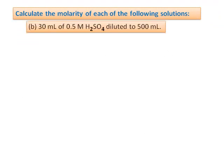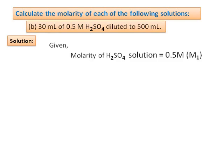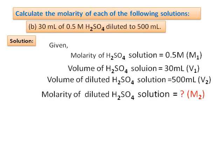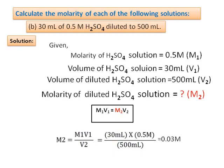For the second problem: given M₁ = 0.5 molar, V₁ = 30 mL, V₂ = 500 mL. Find M₂. Using M₁V₁ = M₂V₂: 0.5 × 30 = M₂ × 500, so M₂ = 0.03 molar. This formula is very important and is frequently used in laboratory practice when preparing solutions.